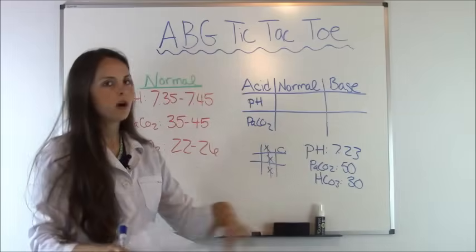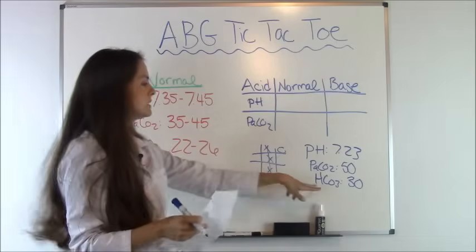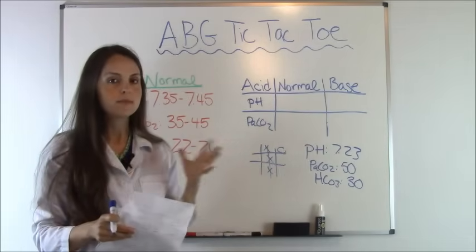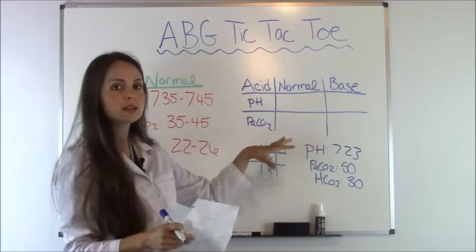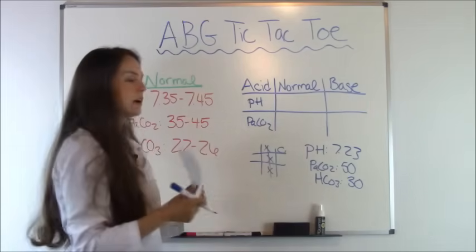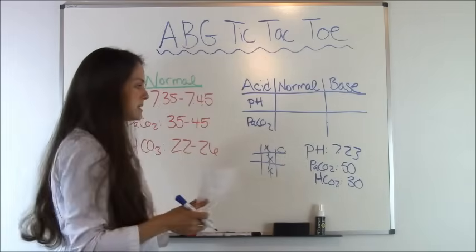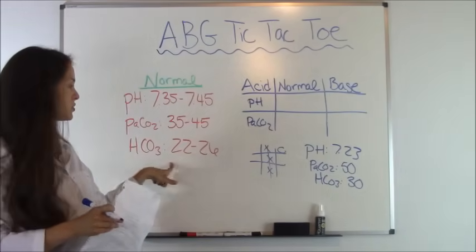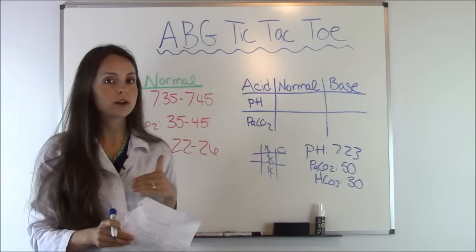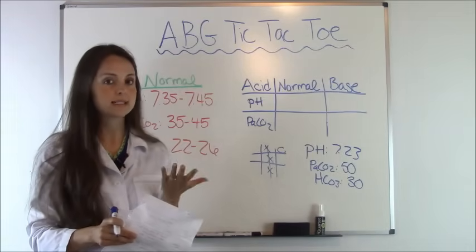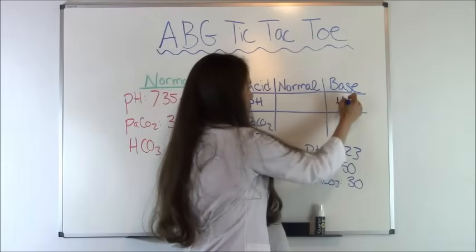Always solve your problem before you start doing your crosses, because we need to know how our metabolic fits into this. This is going to tell us if we're compensating or not. So always put all your values in before you cross down in your three letters. The HCO3 is 30. Normal HCO3 is 22 to 26, so it's 30. Because it's greater than 26, it's basic, so they're alkalotic. So under base, we're going to write HCO3.